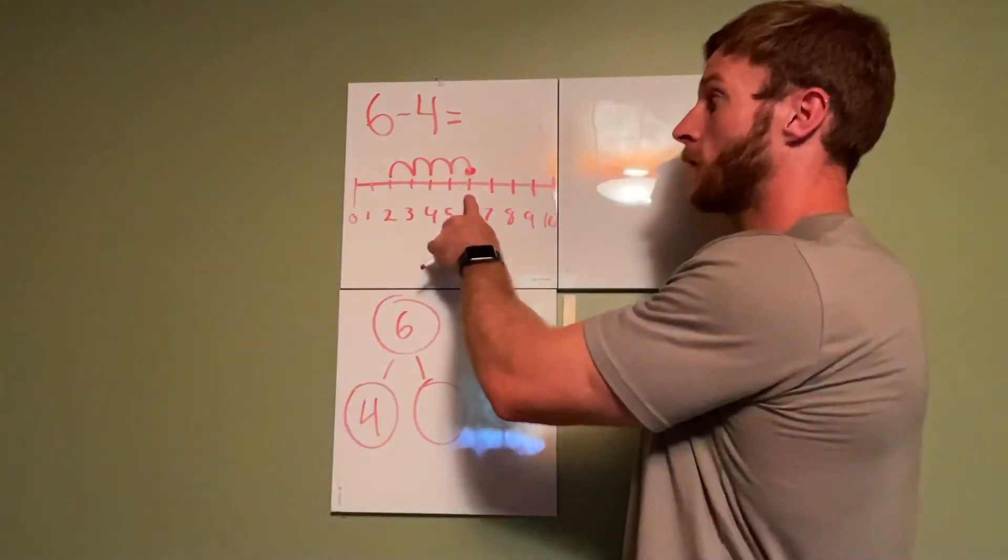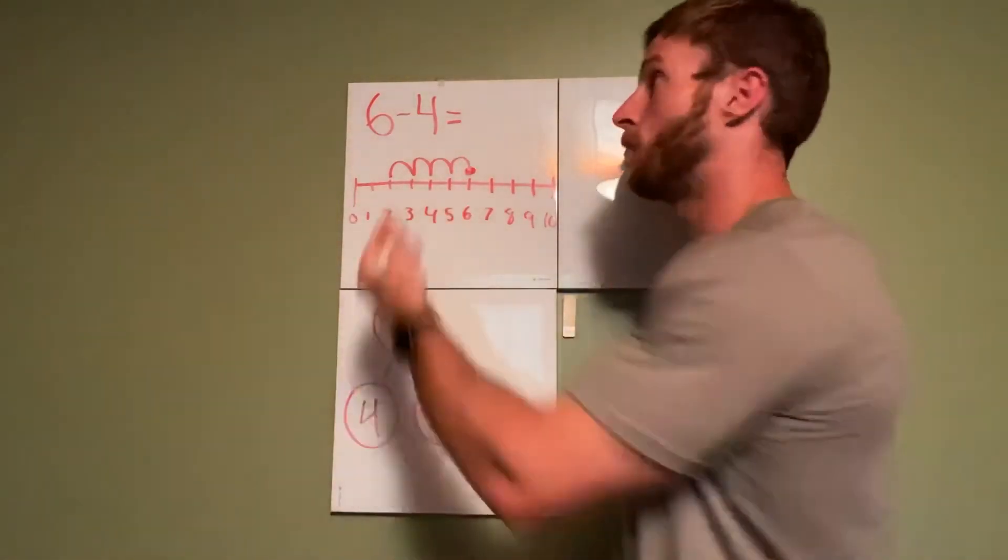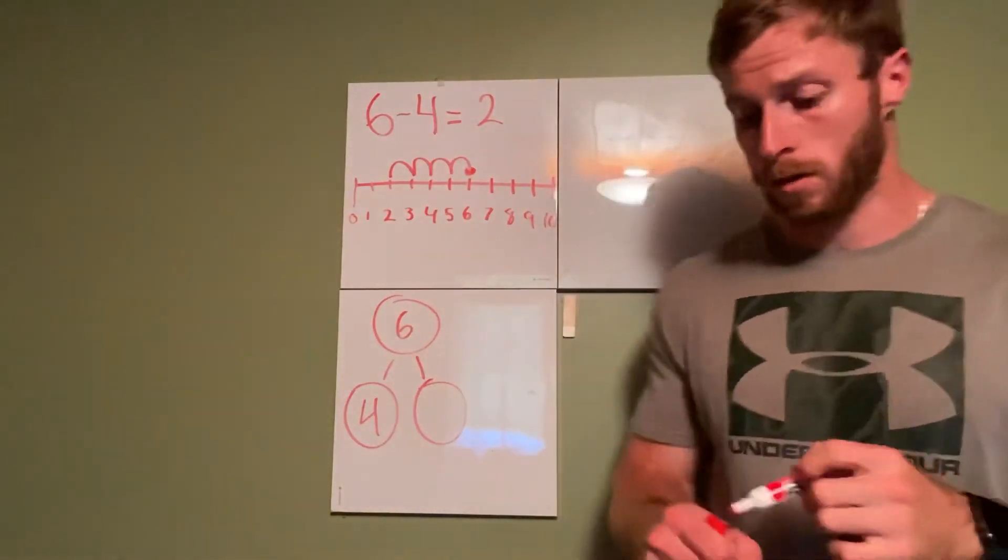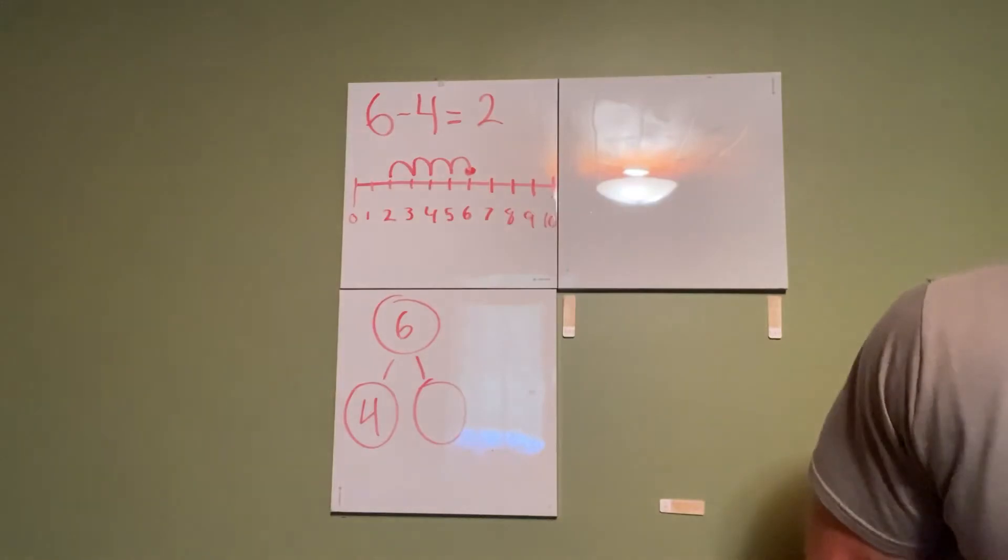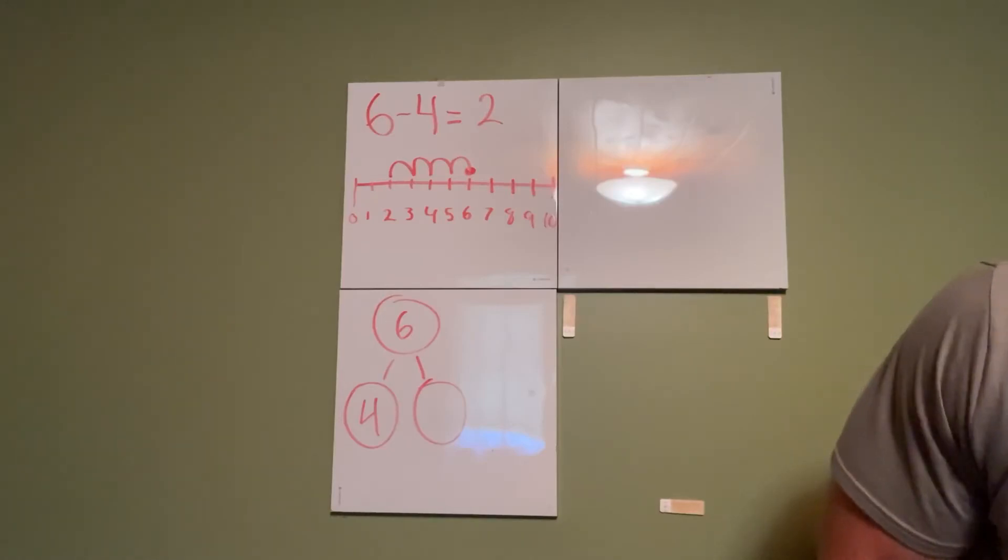What number did I end on? Can you see it? I ended on the number two. So that means if I started with six and I took four of these numbers away, my answer would be two. Simple as that. I really like number lines. I think you will too. They are quick and easy ways to help us solve problems. Let's do a couple more.